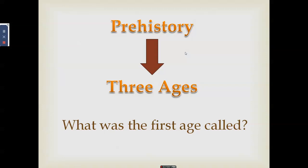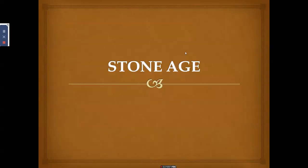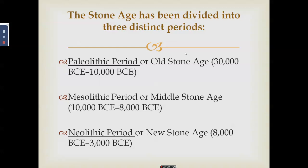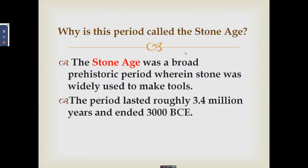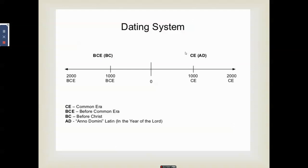The first age is called the Stone Age, which is divided into three distinct periods: the Paleolithic or Old Stone Age, the Mesolithic or Middle Stone Age, and the Neolithic or New Stone Age. The Stone Age lasted roughly 3.4 million years and ended around 3000 BCE. The term BCE also refers to BC, while CE refers to AD.